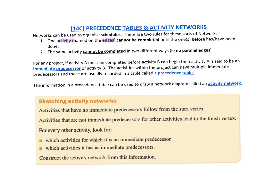You can't say we'll cook the toast another way — it's just cooked the same way and we wait until it's done. For any project, if activity A must be completed before activity B can begin, then activity A is said to be an immediate predecessor. Activities within a project can have multiple immediate predecessors, and these are recorded in a precedence table. The information in a precedence table can be used to draw a network called an activity network.